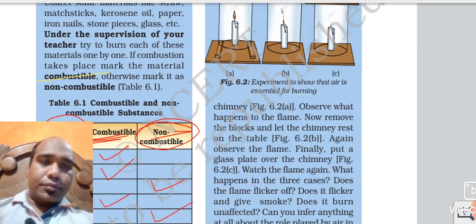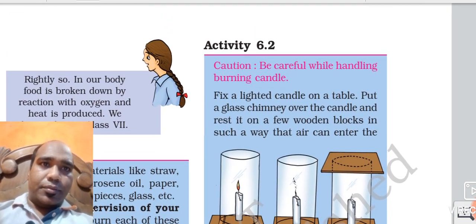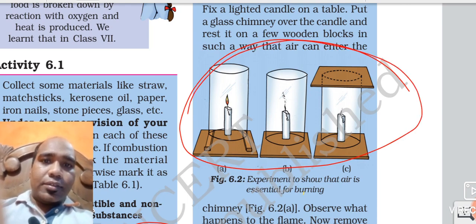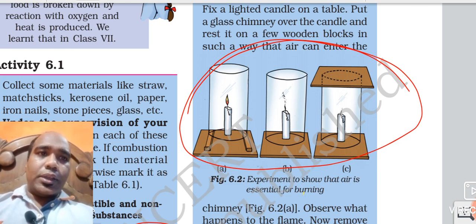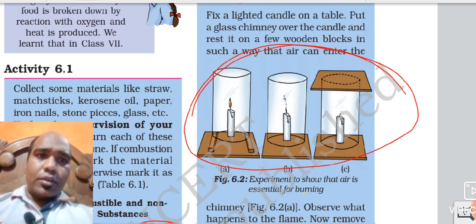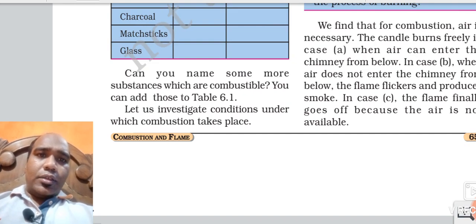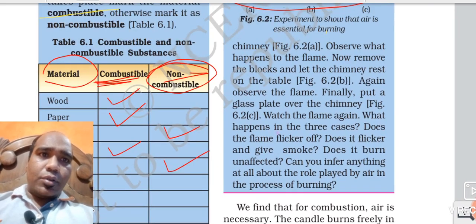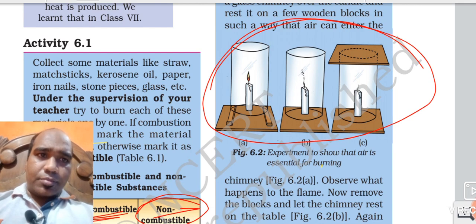Now there is one topic - one experiment about whether air is essential. I told you: without oxygen you cannot burn anything. Combustion cannot take place without oxygen. So one experiment is given in your book: without air, means without oxygen, air is essential for combustion. This experiment you can read out; I am explaining it.